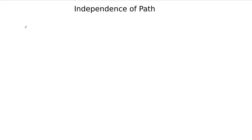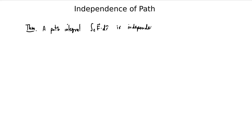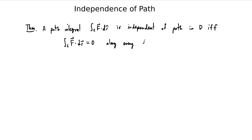In this video we'd like to prove the following theorem. It says that a path integral, the integral c of f dot dr, is independent of path in a domain d, if and only if the path integral of f dot dr is equal to zero along every closed path c that's contained in d. This is what we want to try to prove in this video.